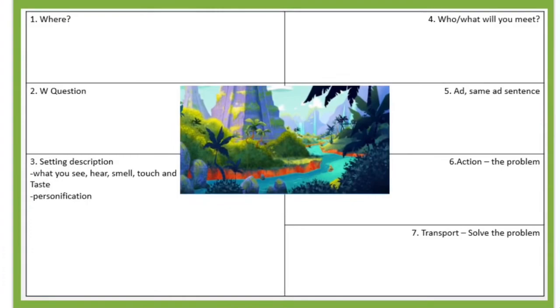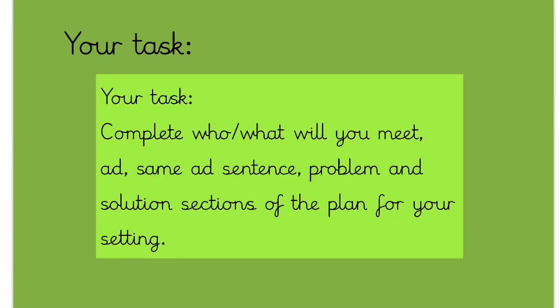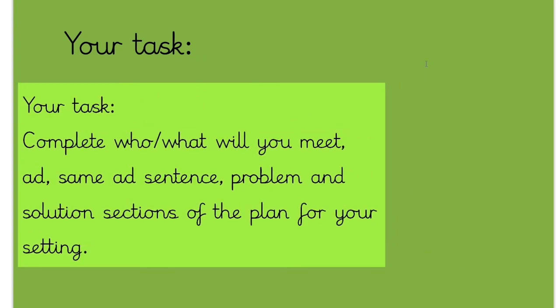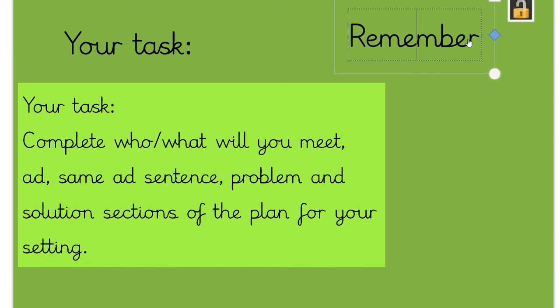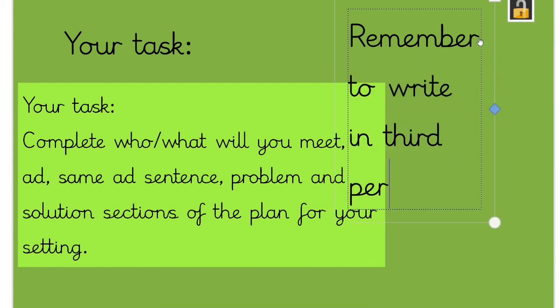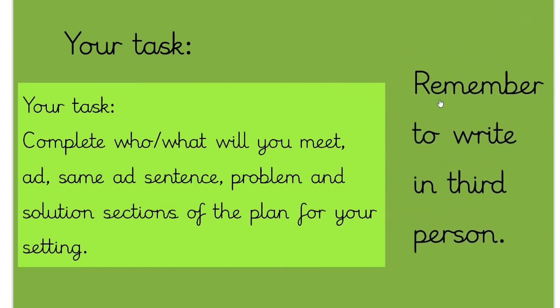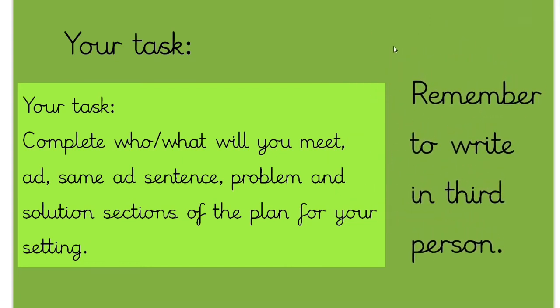Your task today is to complete the final four boxes of your plan. Remember to write in third person — that's something even I forgot. So remember, this is about Tony, or Freddie, or whoever your character is. If you were going to write 'I,' remember to put 'they' or Tony instead. Today you're going to complete: who or what will you meet, the ad-same-ad sentence, the problem, and the solution sections of your plan for your setting.